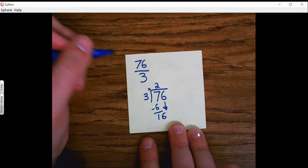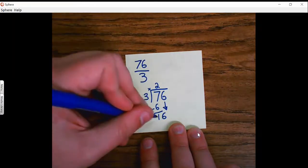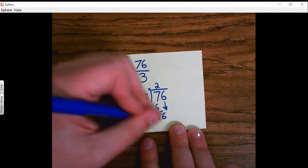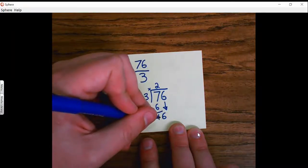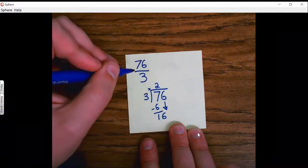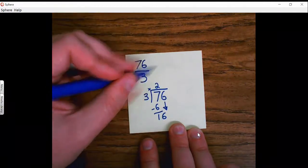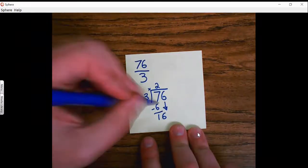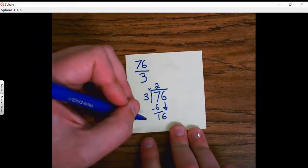And I'm going to ask, how many groups of 3 can I take out of 16? Now remember, I've still got 16, so if I were to put 16 over 3, it would still be an improper fraction with a whole number next to it. But I want to get as many out as I can.